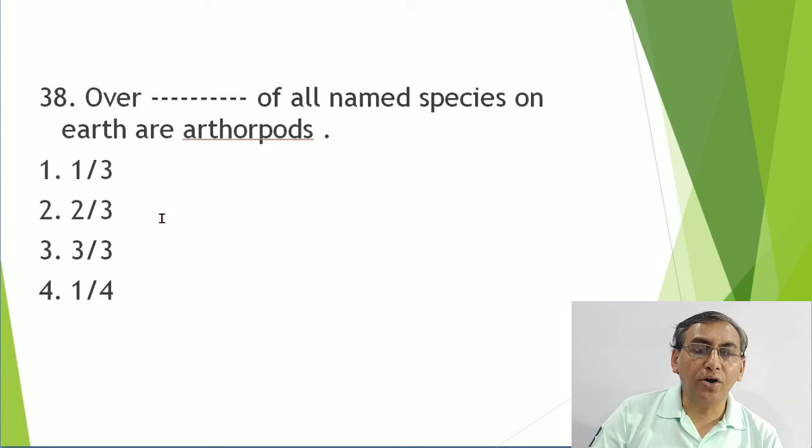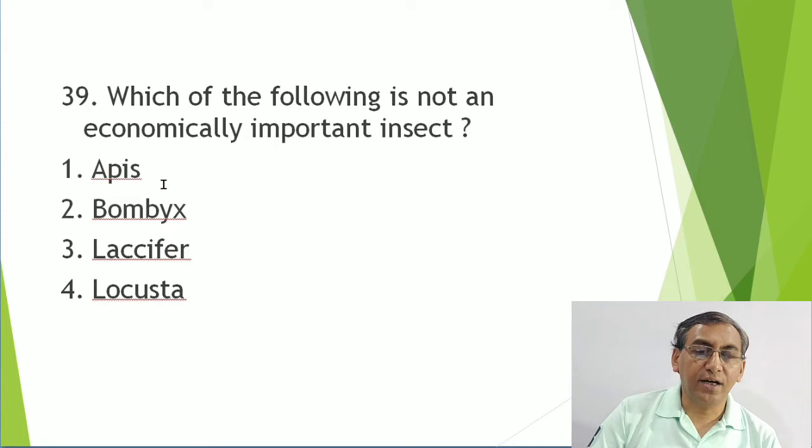Not an economically important insect: Apis is the honeybee, Bombyx is the silk moth, Laccifer lacca is the lac insect - these are economically important. A gregarious pest like locust is harmful, not economically beneficial. Anopheles, Culex, and Aedes are mosquitoes - vectors of disease.